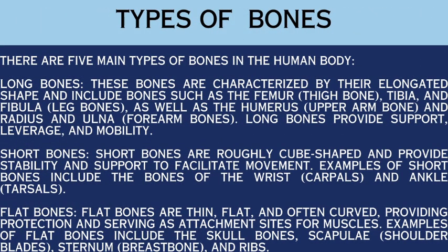Types of bones. Basically, there are 5 main types of bones in the human body. First, long bones — these bones are characterized by their elongated shape and include the femur (thigh bone), tibia and fibula (leg bones), humerus (upper arm bone), and radius and ulna (forearm bones). Long bones provide support, leverage, and mobility. Second, short bones — short bones are roughly cube-shaped and provide stability and support to facilitate movement. Examples include the carpals (wrist) and tarsals (ankle).